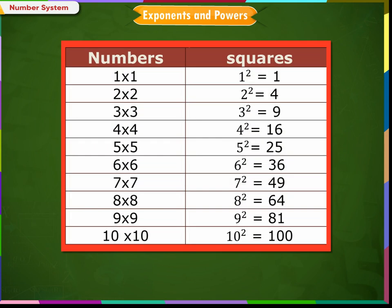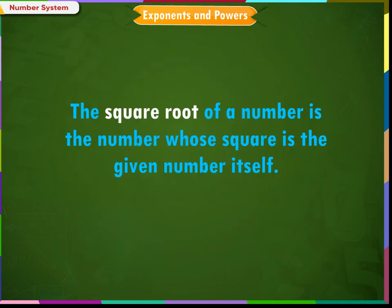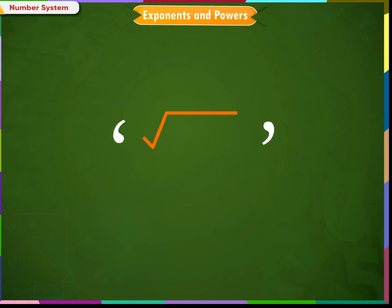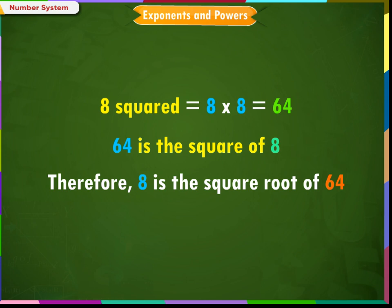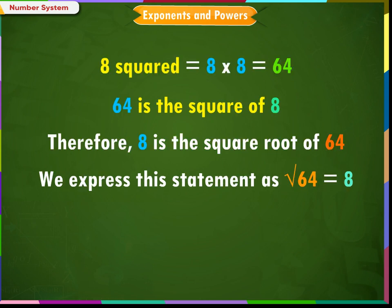Observe the screen. All square numbers till 100 are shown. The square root of a number is the number whose square is the given number itself. The square root is denoted by the radical symbol. For example, 8 squared is equal to 8 × 8 = 64, so 8 is the square root of 64. We express this as √64 = 8.